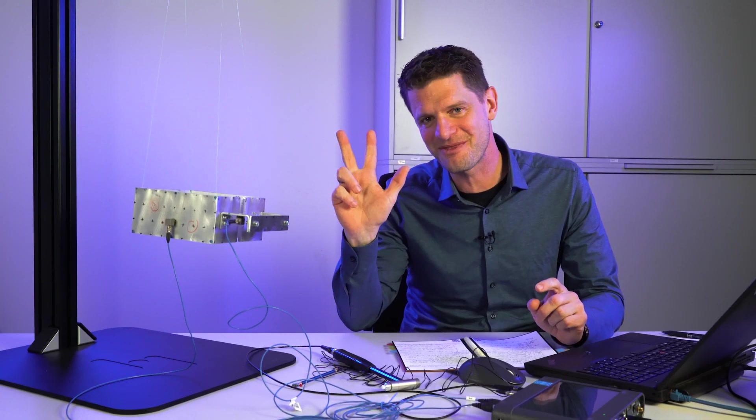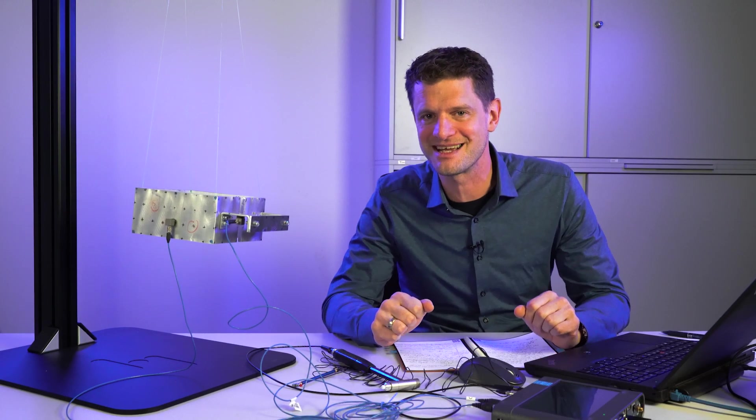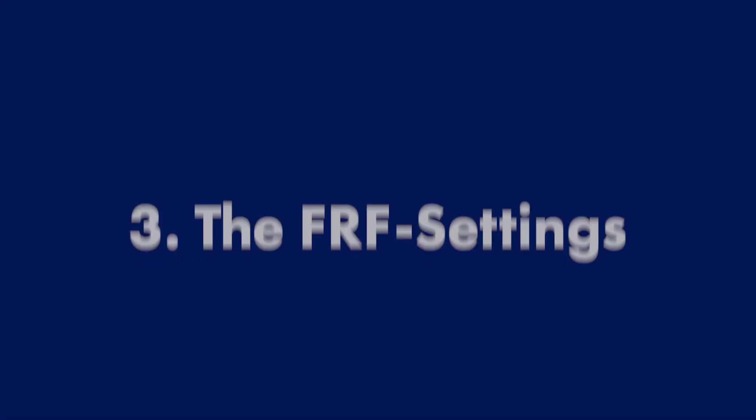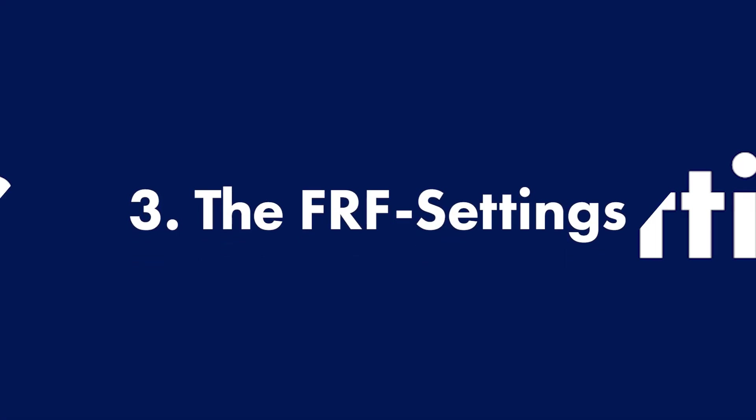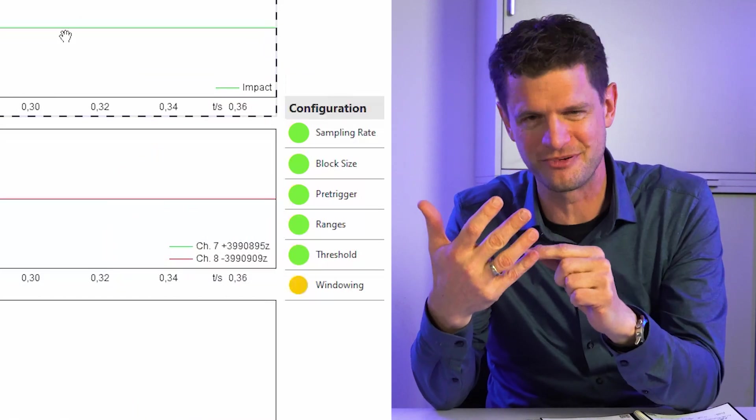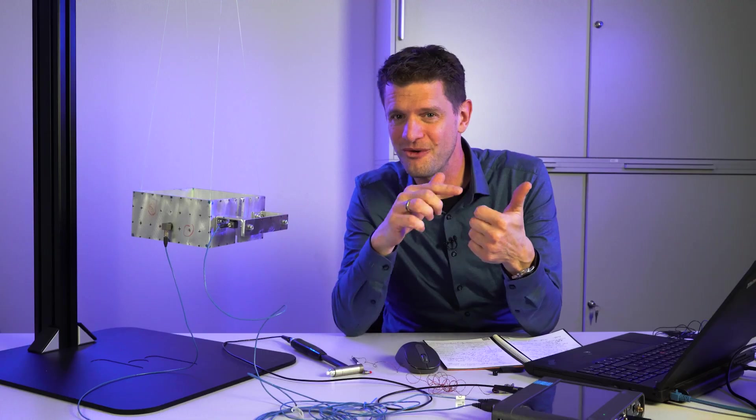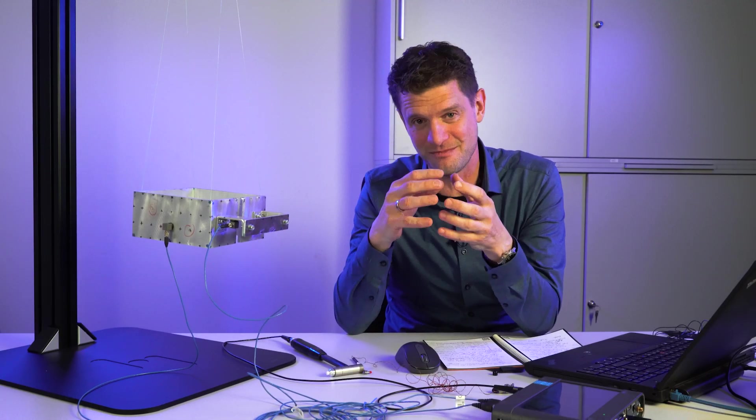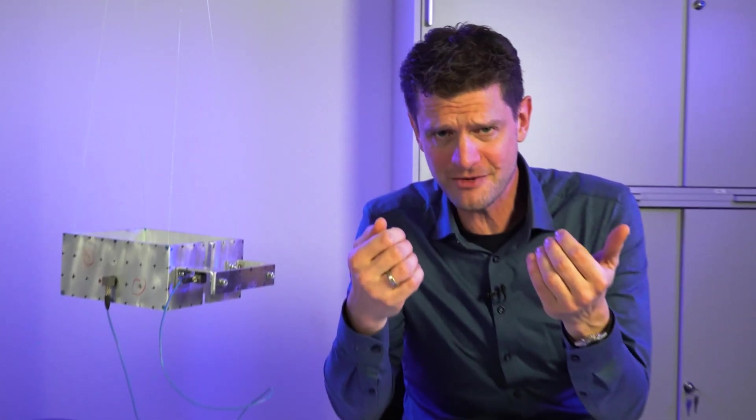And this brings us to place number three in the top five common mistakes in modal analysis. And it is an obvious source of error. The proper FRF settings. Sampling rate, block size, the range, the threshold, the pre-trigger and the windowing. All these settings affect the measuring time and therefore the frequency resolution of your FRF. And everything depends on each other. So where to start? How can I set this?